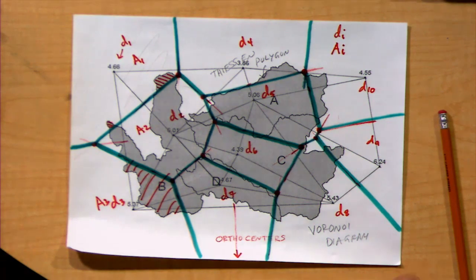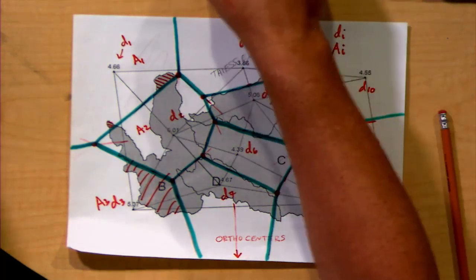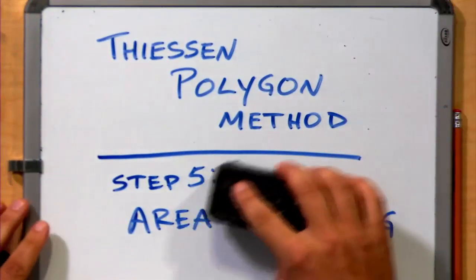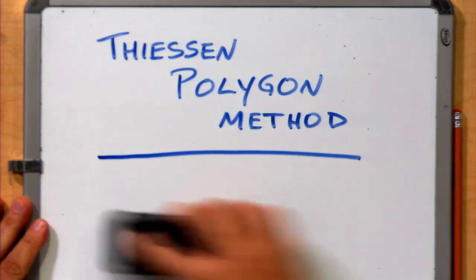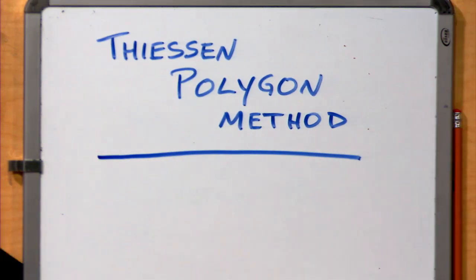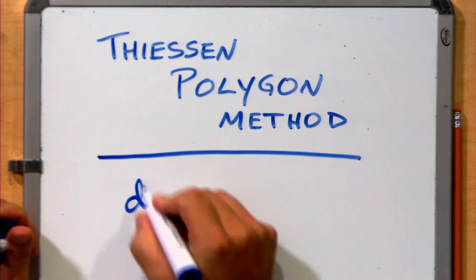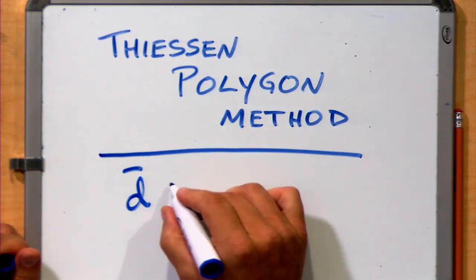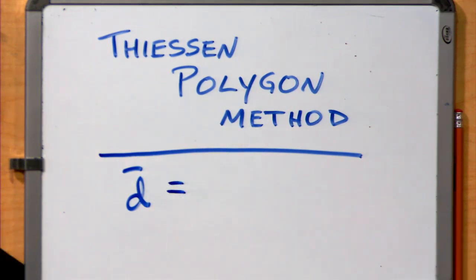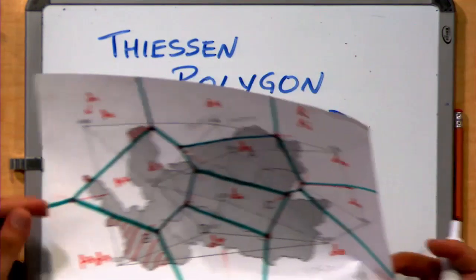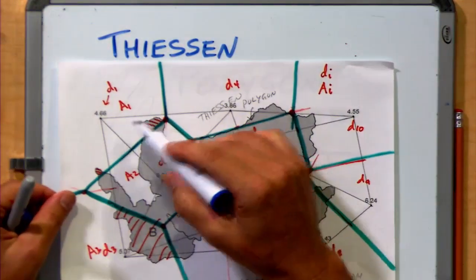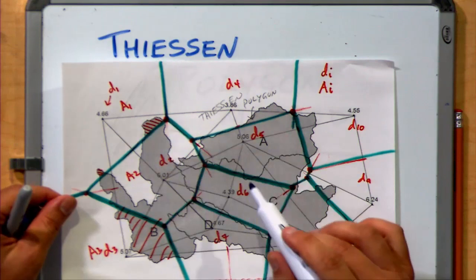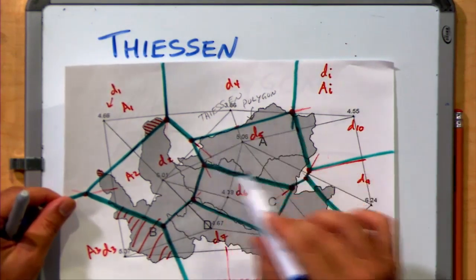One of the common ways to use areas like this is in what we call area weighting. The Thiessen Polygon Method, one of the things we can do is, let's say we wanted to find an average depth. Well, one of the ways we can find an average depth here is we can assume that the depth that's associated with very little bit of the area contributes less than the depths that are associated with a large amount of the area.